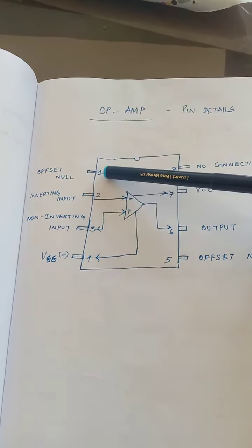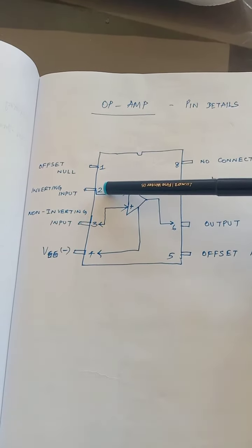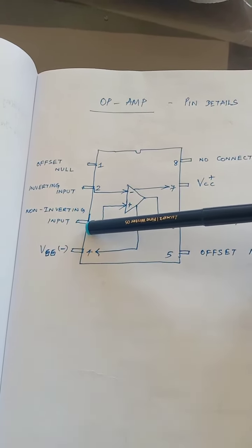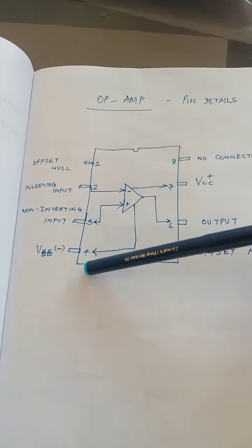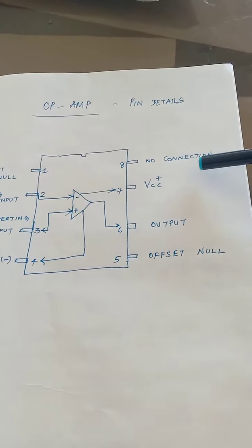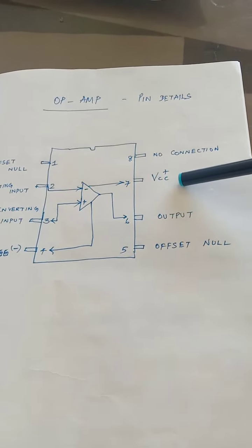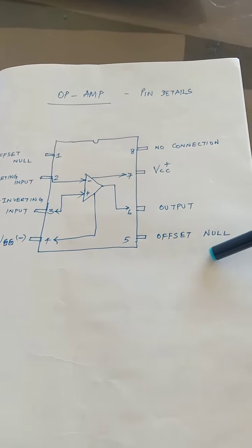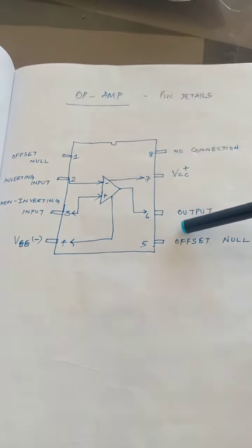Pin number 1 is offset null. Pin number 2 is inverting input. Pin number 3 is non-inverting input. Pin 4 is minus VE (negative supply). Pin 8 is no connection. Pin 7 is plus VCC. Pin 6 is the output terminal. Pins 1 and 5 are offset null.